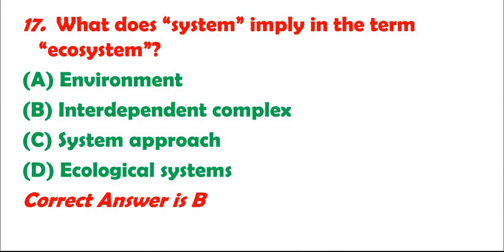Question 17: What does 'system' imply in the term ecosystem? A. Environment. B. Interdependent complex. C. System approach. D. Ecological systems. Correct answer is B.